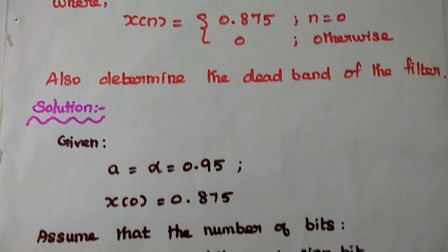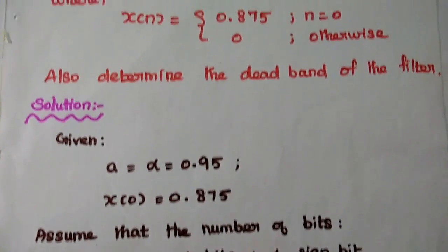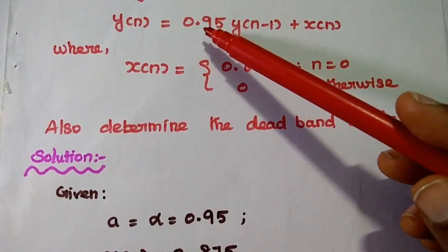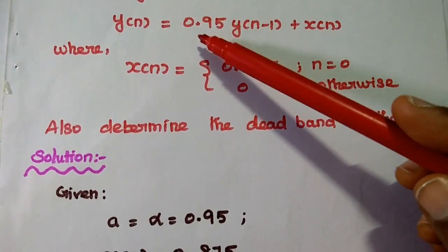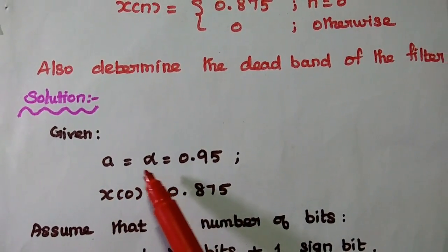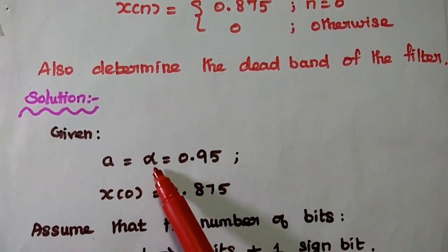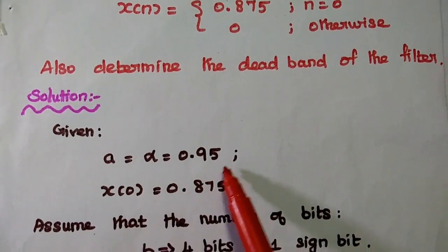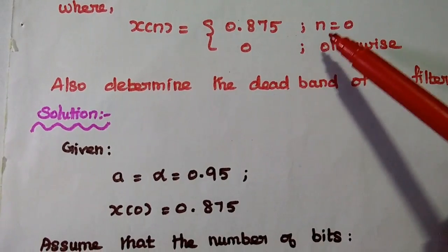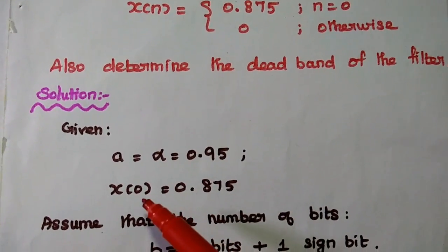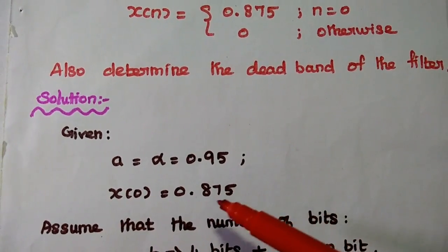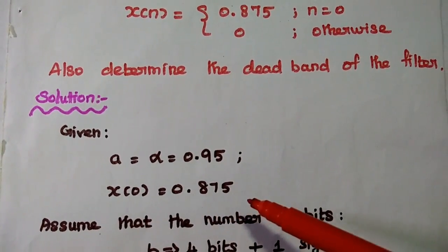In the solution part, from the given equation we know that the multiplier coefficient value — represented as 'a' or alpha — is 0.95. The input x(n) has value 0.875 only at n equal to 0, so x(0) is equal to 0.875. For the remaining terms, x(1), x(2), x(3), and so on, those values are equal to 0.